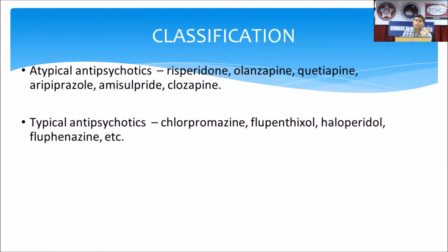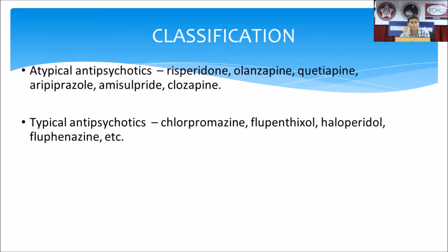Antipsychotics are classified into typical antipsychotics, called first-generation antipsychotics, and atypical antipsychotics. Atypical examples include risperidone, olanzapine, quetiapine, and newer drugs like aripiprazole, amisulpride, and clozapine, which is especially used in treatment-resistant cases. Typical antipsychotics include chlorpromazine, flupentixol, haloperidol, and fluphenazine.